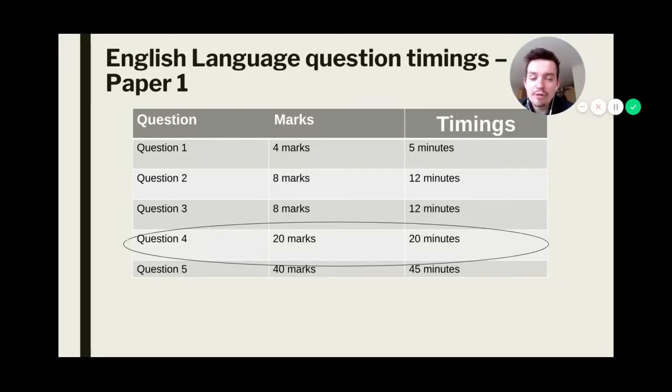Hello there, this is the fourth video looking at the English Language Paper 1, and in today's session we're going to be focusing on Question 4. This is the last question on the reading section of the paper, and it's probably one of the most significant questions, and I would say the differentiator between students getting a Grade 3 and a Grade 4 and a Grade 4 and a Grade 5.